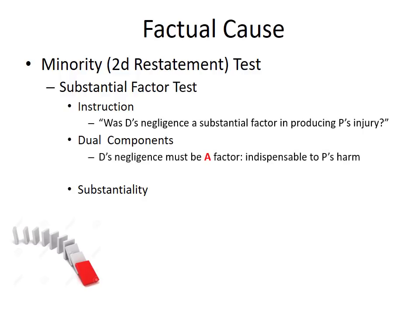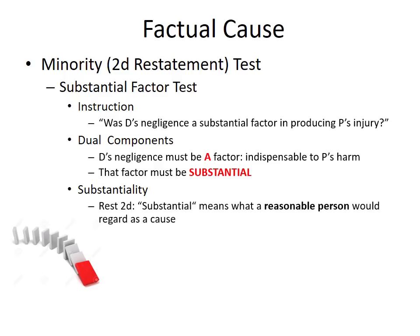There are really two components built into the substantial factor test. First, the defendant's negligence has to be at least a factor in producing the plaintiff's harm — it must have been at least indispensable to bringing it about. The second part is evaluative: assuming it is a factor, is it so substantial that we feel comfortable holding the defendant legally responsible for the resulting injuries? The second restatement doesn't give much guidance on how to determine substantiality. The main test is whether a reasonable person would find the defendant's negligence a substantial factor.